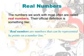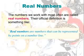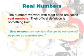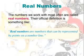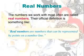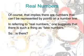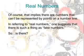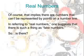The numbers we work with most often are called real numbers. Their official definition is something like: real numbers are numbers that can be represented by points on a number line. Of course, that implies there are numbers that can't be represented by points on a number line. In referring to real numbers, one suggests that there is such a thing as fake numbers.